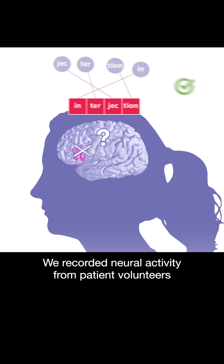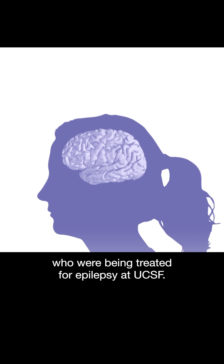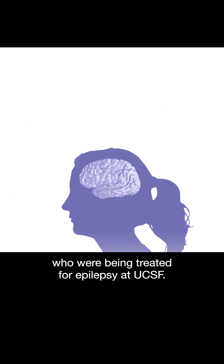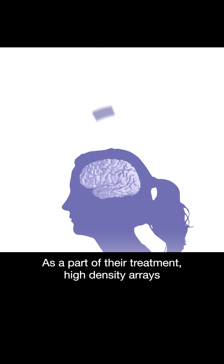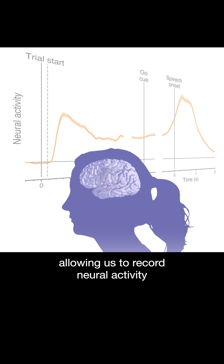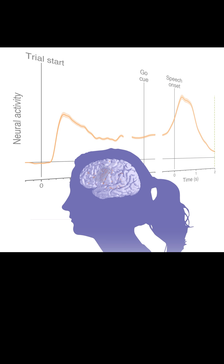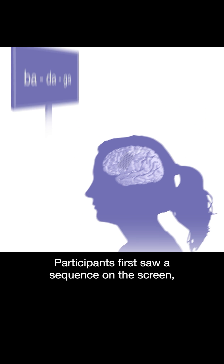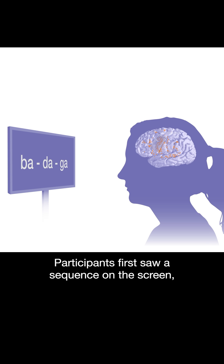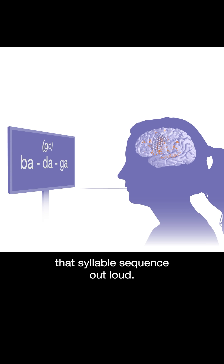We recorded neural activity from patient volunteers who were being treated for epilepsy at UCSF. As part of their treatment, high-density arrays of electrodes are placed directly on their brain, allowing us to record neural activity while they were speaking strings of syllables with varying complexity. Participants first saw a sequence on the screen, then waited for a go cue to say that syllable sequence out loud.